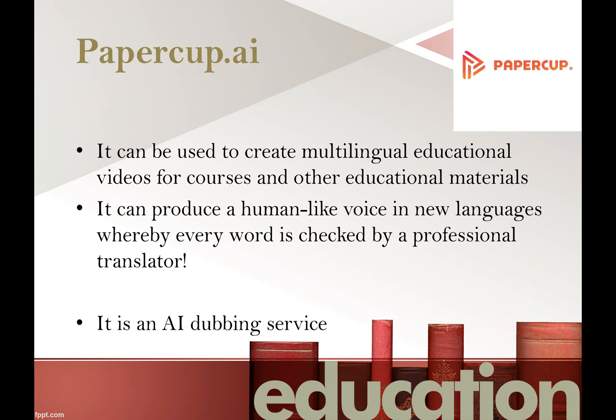What does that mean? It means that AI voice dubbing uses sophisticated algorithms to analyze the original voice's characteristics, transcribes the spoken words and translates them into the desired language. It then uses text-to-speech technology to produce the speech, making sure the dubbed voice matches the lip movement in the video. Papercup is an award-winning AI that produces human-like voices in new languages, while every word is checked by a professional translator.